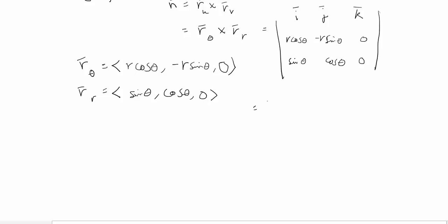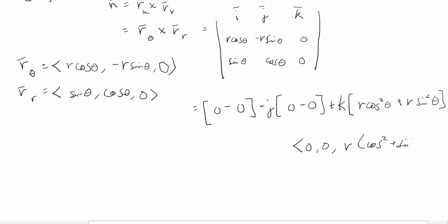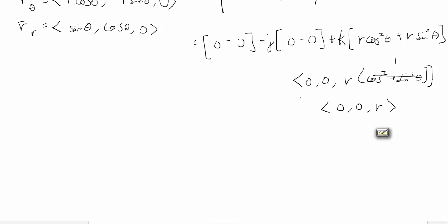The cross product gives us 0 − 0 for the i component, minus j which again gives 0 − 0 — we expected this since the result should be only a k component. The k component is r cos²θ − (−r sin²θ). Pulling out r, we get r(cos²θ + sin²θ), which by the trig identity equals r. So the normal vector is (0, 0, r), and it is positive, confirming we used the correct order for the cross product.